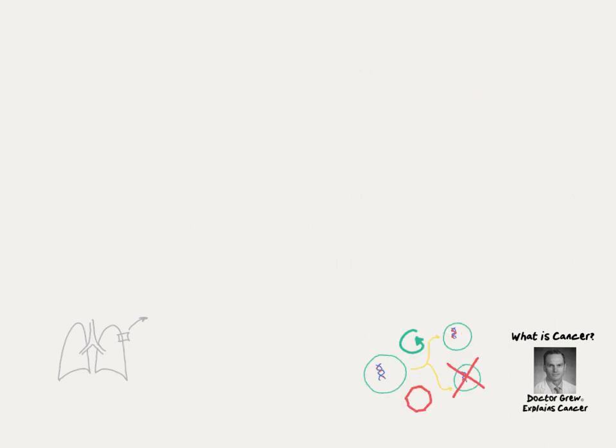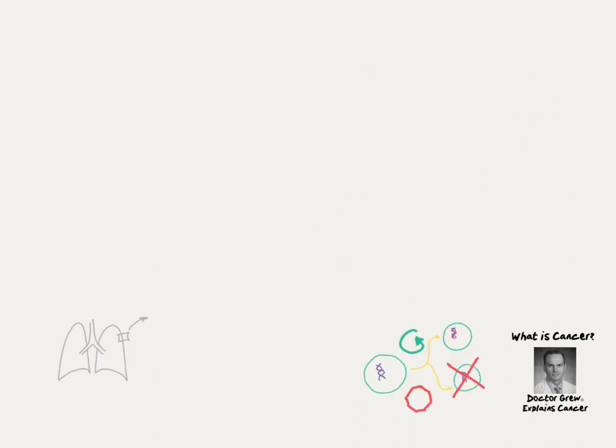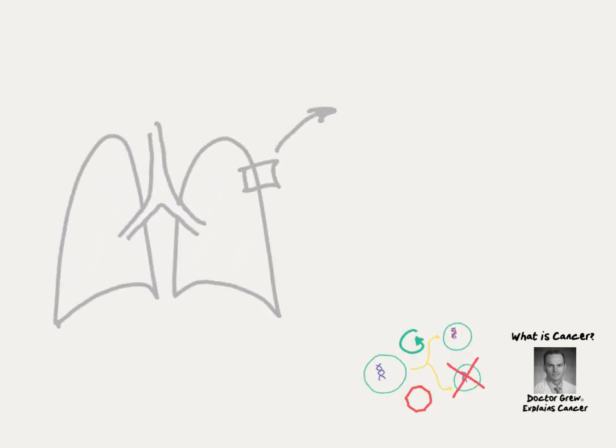If we leave the microscopic world and go back to the example of the lung, we see that a cancer starts as a small group of cells. But over time, they start to grow out of control.